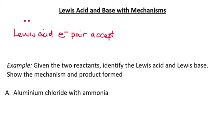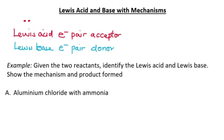A Lewis base is the opposite of a Lewis acid, which is why they are able to perform a neutralization reaction. A Lewis base is an electron pair donor — due to having sufficient electrons, it is able to donate electrons to a Lewis acid, resulting in the formation of a bond or the removal of a particular substituent from a main group.